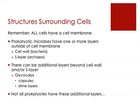Outside of the cell membrane, prokaryotic cells also have one or more layers of additional materials. Bacteria, for example, have a layer outside of the membrane called the cell wall. Archaea don't have a cell wall; they instead have a structure called an S layer. Outside of a cell wall or an S layer, there can also be additional layers of material — these are referred to as glycocalyx. There are two kinds of glycocalyx: a capsule and a slime layer.